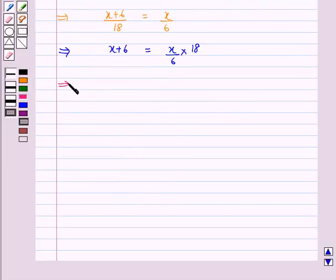So this implies X plus 6 is equal to 3X, and this implies 3X minus X is equal to 6. This implies 2X is equal to 6, or X is equal to 3.